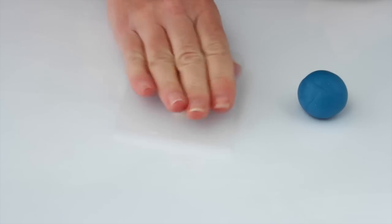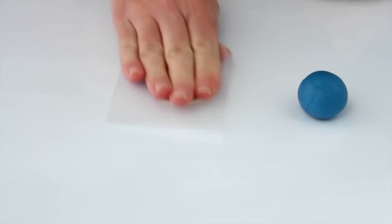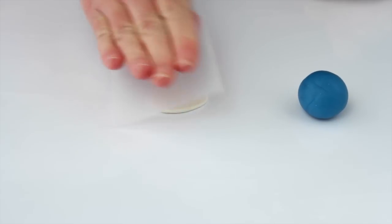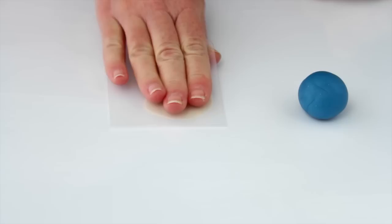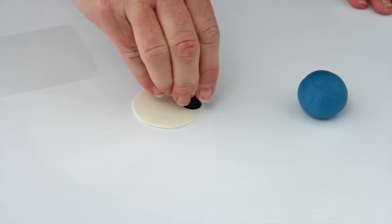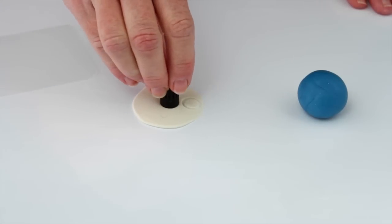Roll out the white play-doh evenly. Push a pen lid into the play-doh to make small flat white circles.